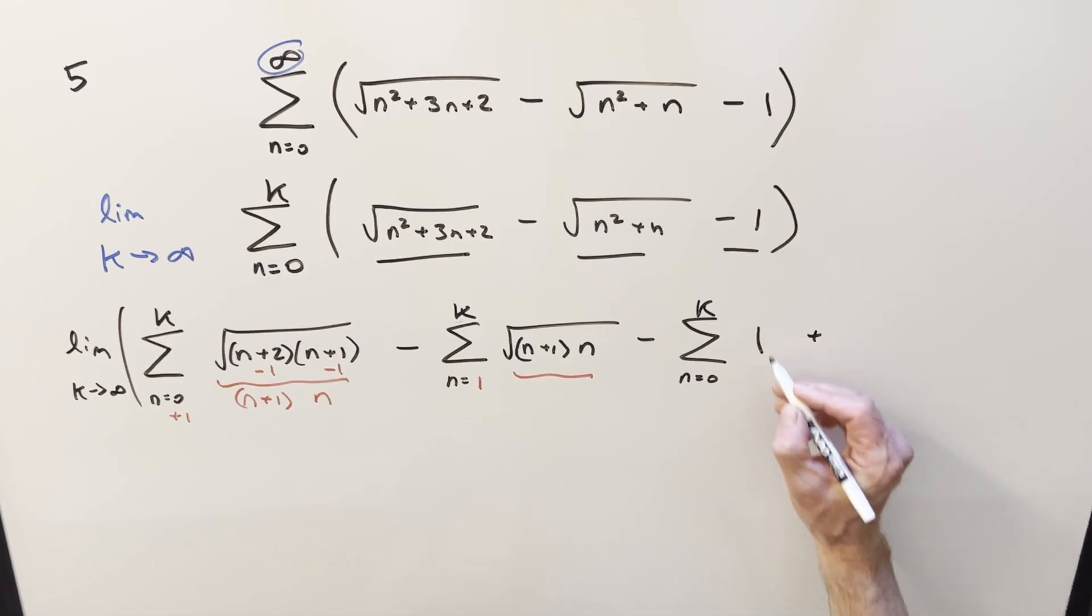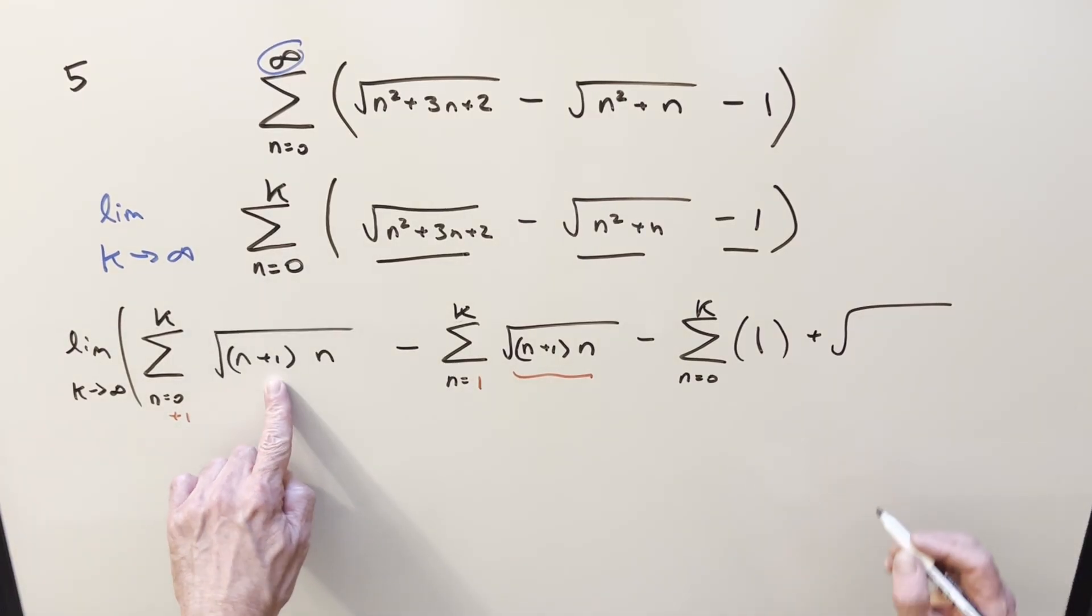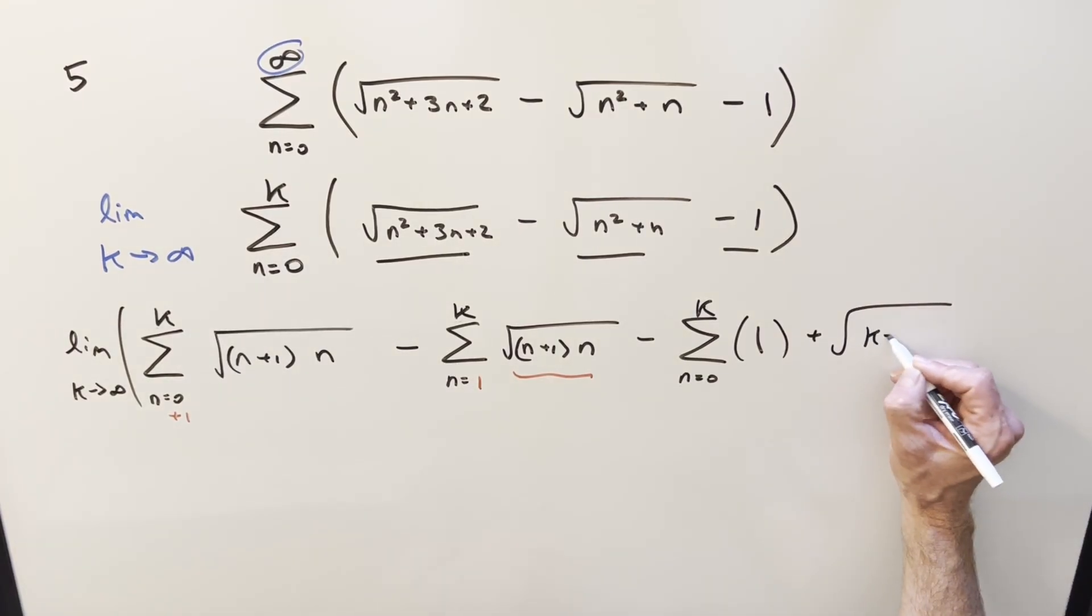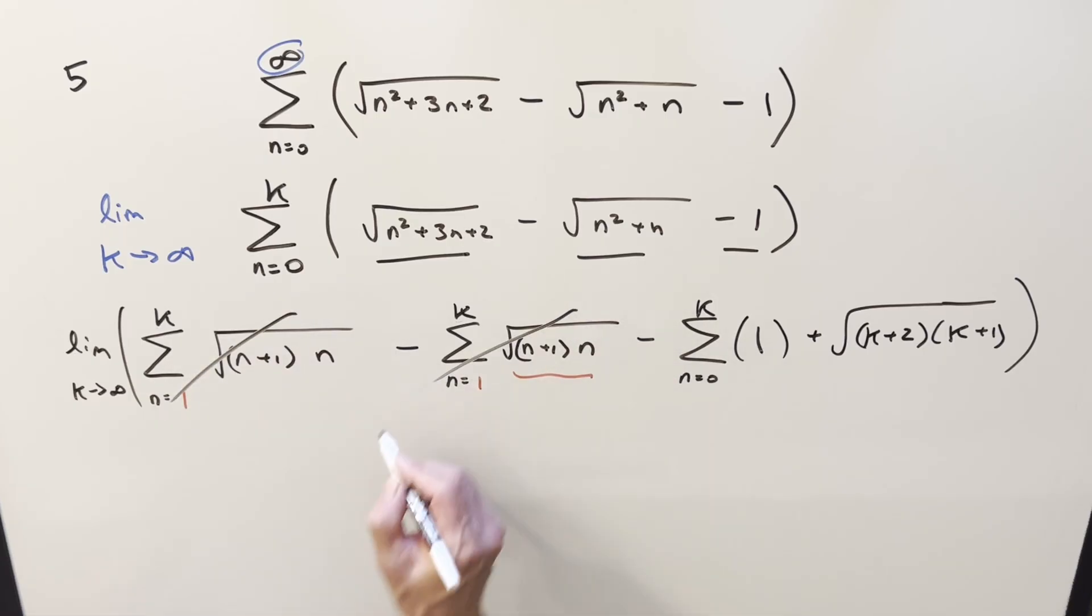So doing that here, we'll write it like this and this is going to become, and I should clarify, this has been rewritten. So let me put it the way we have it over here. So now plugging our k plus one into this, this becomes k plus two times k plus one all inside the radical.